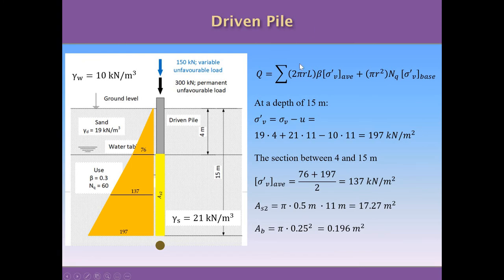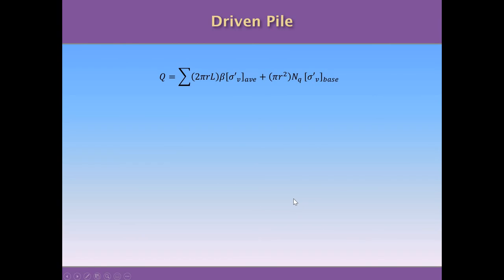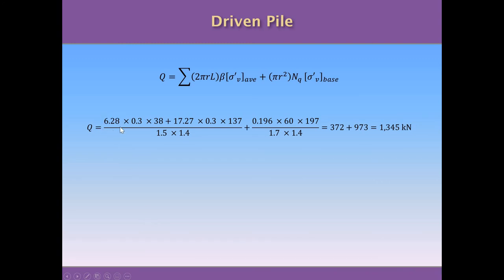We now have all the data needed to apply the formula. There are two shaft terms and one base term. The first shaft term uses: lateral area 6.28 m², beta = 0.3, average effective stress = 38 kN/m². The second shaft term uses: lateral area 17.27 m², beta = 0.3, average effective stress = 137 kN/m². The base term uses: base area 0.196 m², Nq = 60, and effective stress at the base = 197 kN/m².